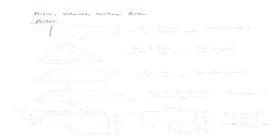We can find the area of a rectangle, which we've done before. The area of a rectangle is length times width. Our units will be in square units. For example, if you have a rectangle that's 4 inches by 3 inches, the area would be 12 square inches. This dimension would be the length and this would be the width.